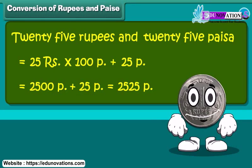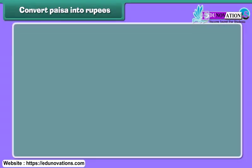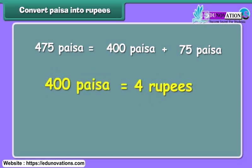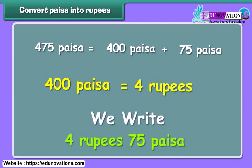Amazing! So much money! It's time to convert paisa into rupees. 475 paisa is equal to 400 paisa plus 75 paisa. As we know, 400 paisa is equal to 4 rupees. Therefore, we can write it as 4 rupees and 75 paisa.